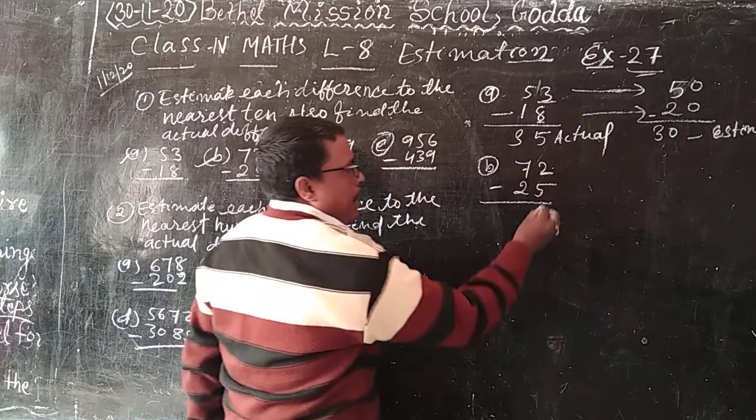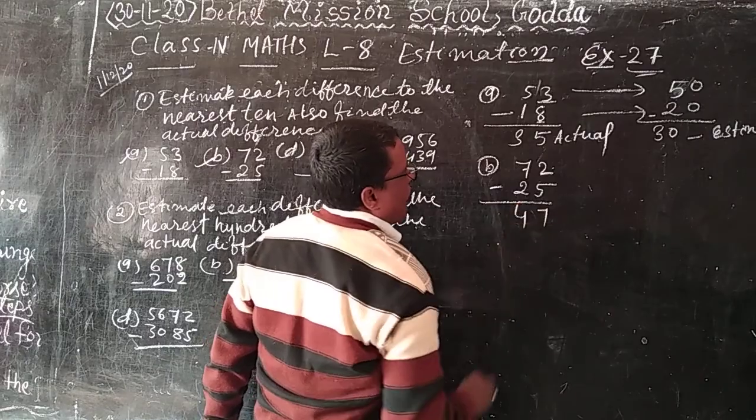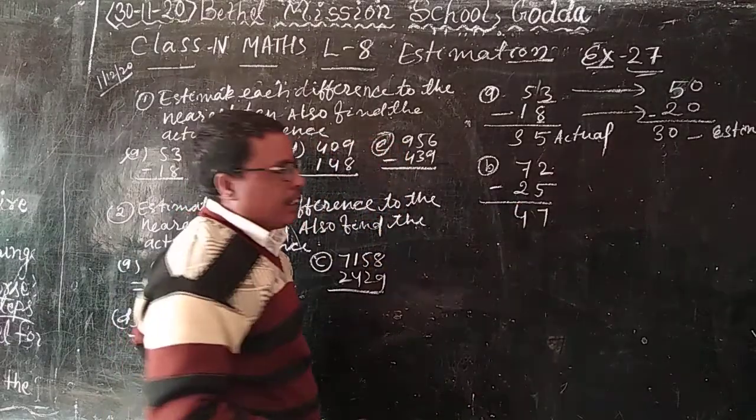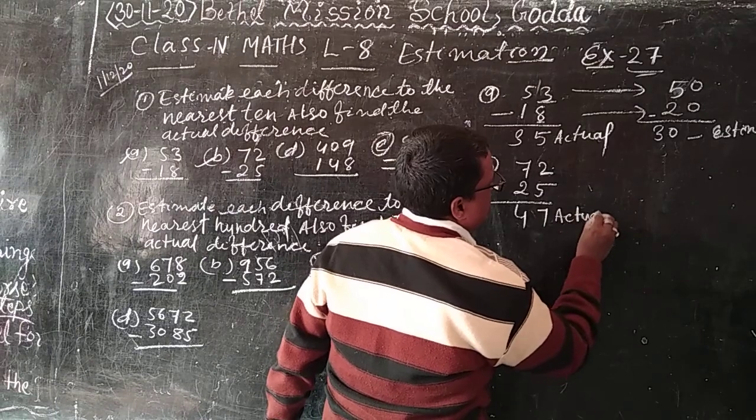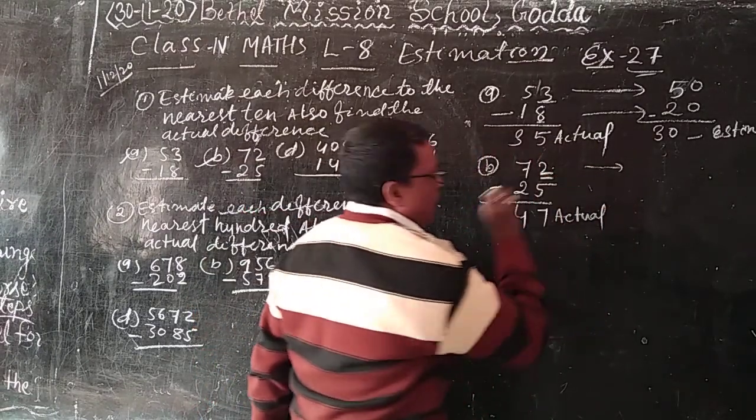12 minus 5, 7. 6 minus 2, 4. 47 is actual. So here estimate. 2 is less than 5.